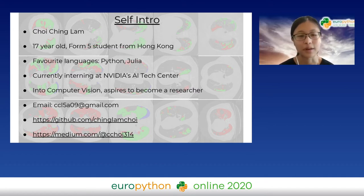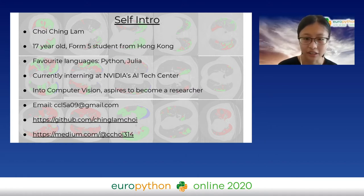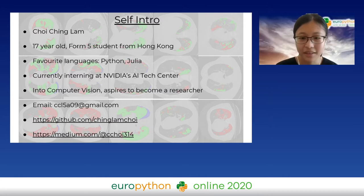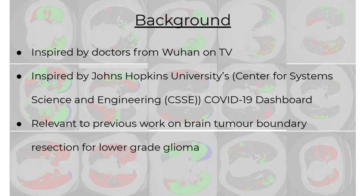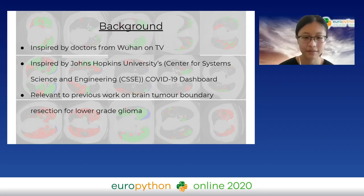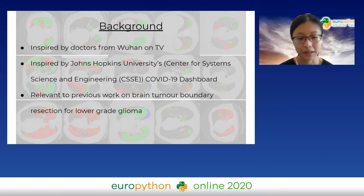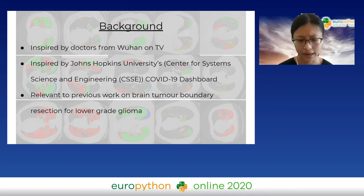I was also inspired by Johns Hopkins University — they showed me that we can leverage technology to help battle the pandemic, and I wanted to do my part as well. They created the COVID dashboard, which was very helpful to people globally. I had also previously done a project on brain tumor boundary resection for lower-grade glioma, which also involved segmentation. So I was thinking perhaps we could transfer that experience to help out with the coronavirus.